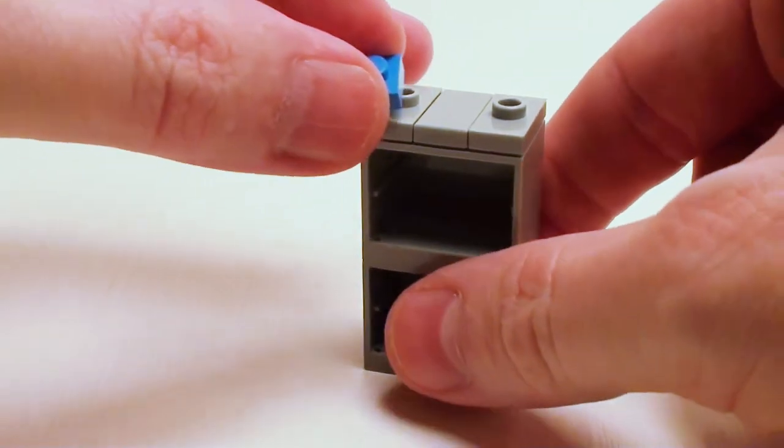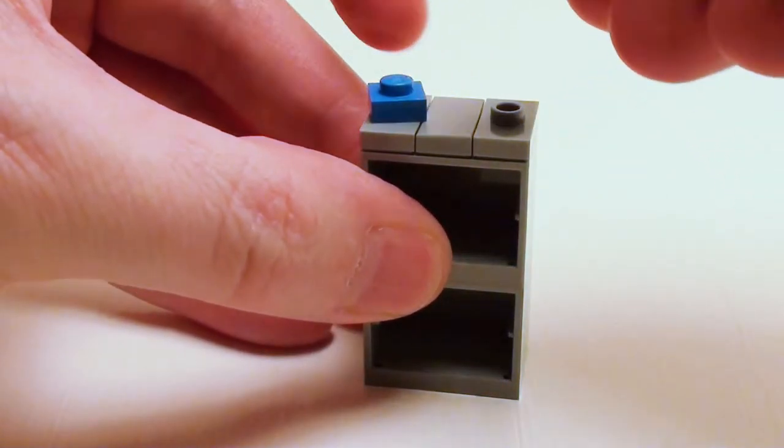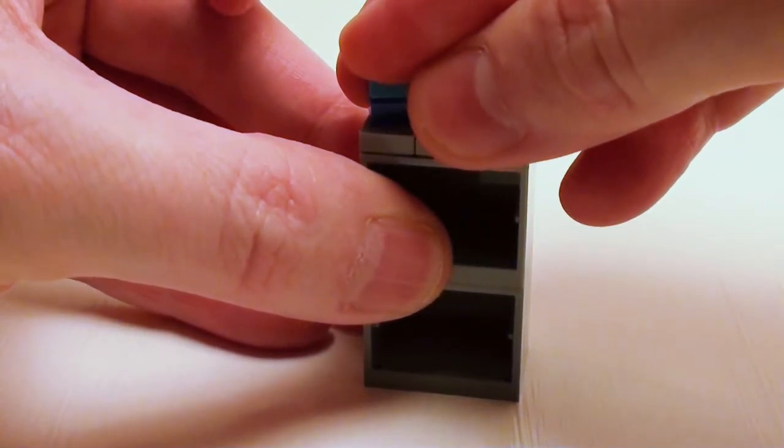On the left hand side, let's place a 1 by 1 plate and a 1 by 1 flat tile for a little box.